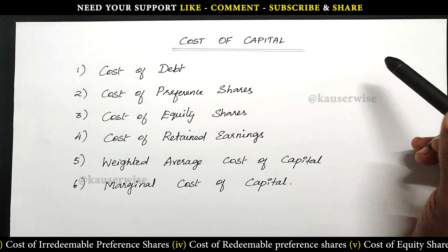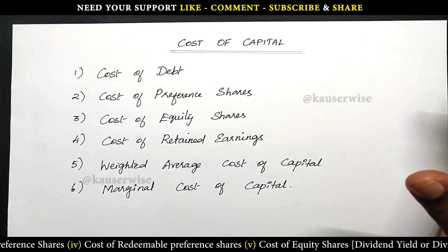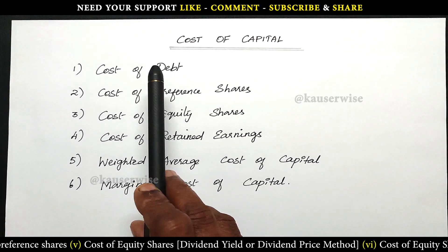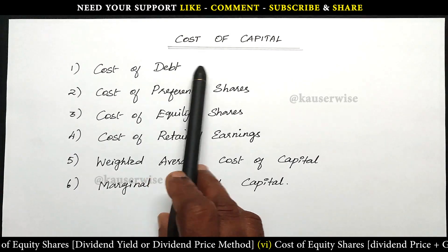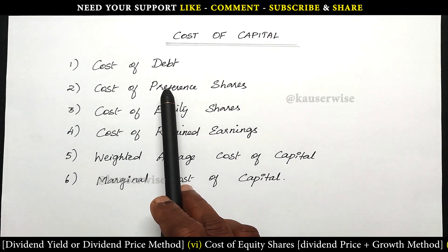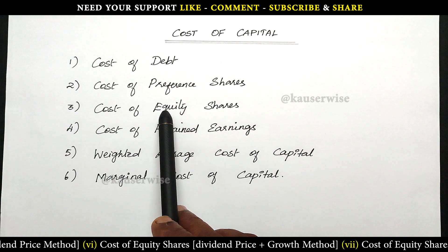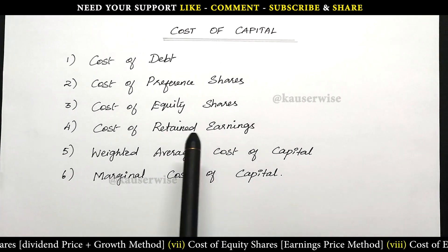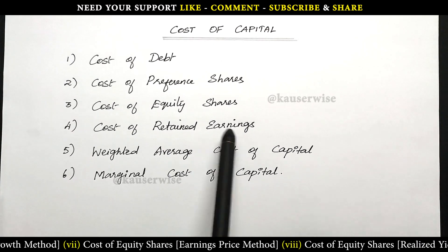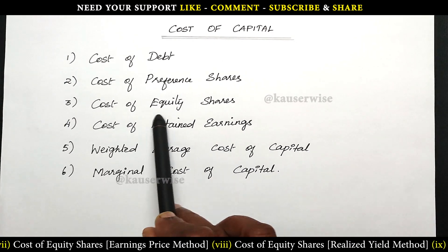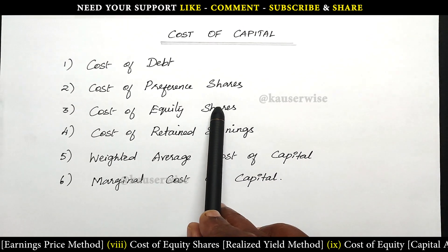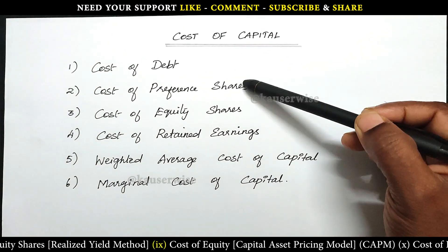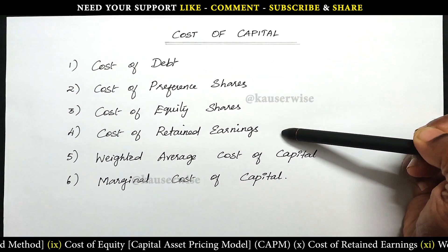Generally in an organization, the long-term fund consists of four different components. Number one is debt, that is long-term borrowings or debentures. The second one is preference share capital, the next one is equity share capital, and the fourth component is retained earnings — that is undistributed or accumulated profits. This amount fully belongs to equity shareholders, and is also an internal source of long-term fund. So these are the four components of long-term fund for the organization.